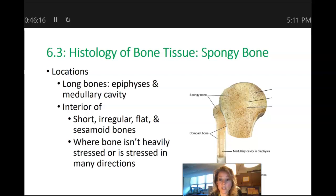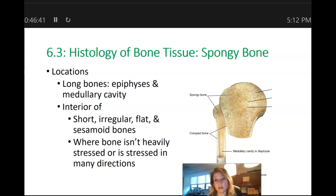Wherever bone isn't heavily stressed, that's where you're going to have your spongy bone. The compact bone is the type that can handle stress — that's why the periosteum is on the outside, connected to tendons. When muscles contract and the tendons pull on the bone, that's stress. We need that compact bone on the outside to ensure that our bones don't break under the stress put upon them by our muscles.